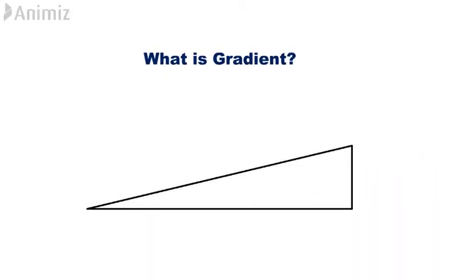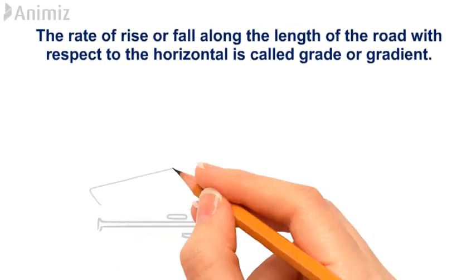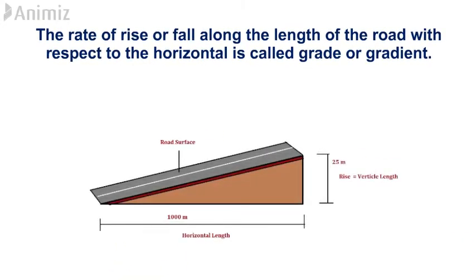What is gradient? The rate of rise or fall along the length of the road with respect to the horizontal is called grade or gradient.